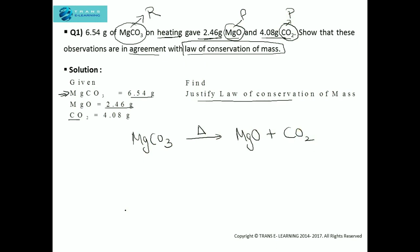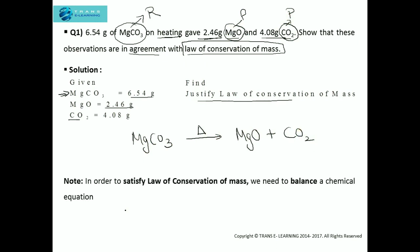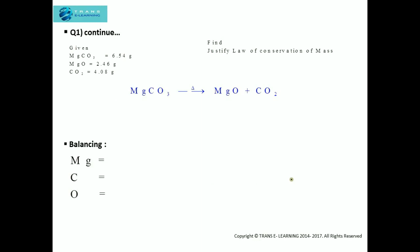Now we know the equation. In order to satisfy the Law of Conservation of Mass, we need to balance this chemical equation. The first rule is to balance the number of metal atoms. The metal in this equation is just magnesium. On the reactant side we have one atom, and on the product side we also have one atom. So this is balanced.